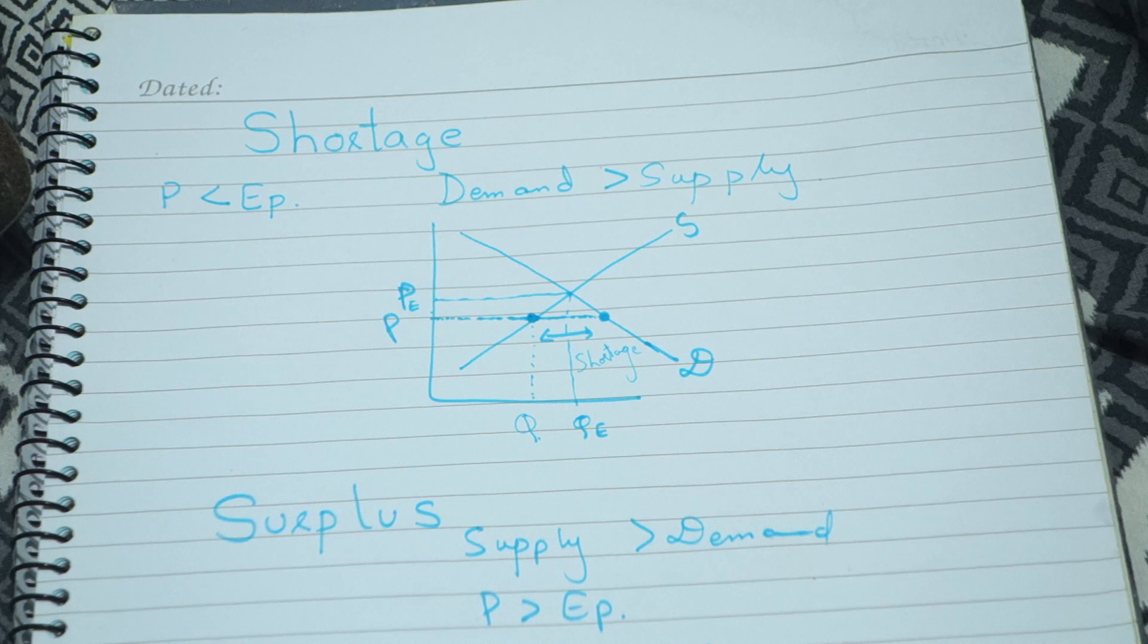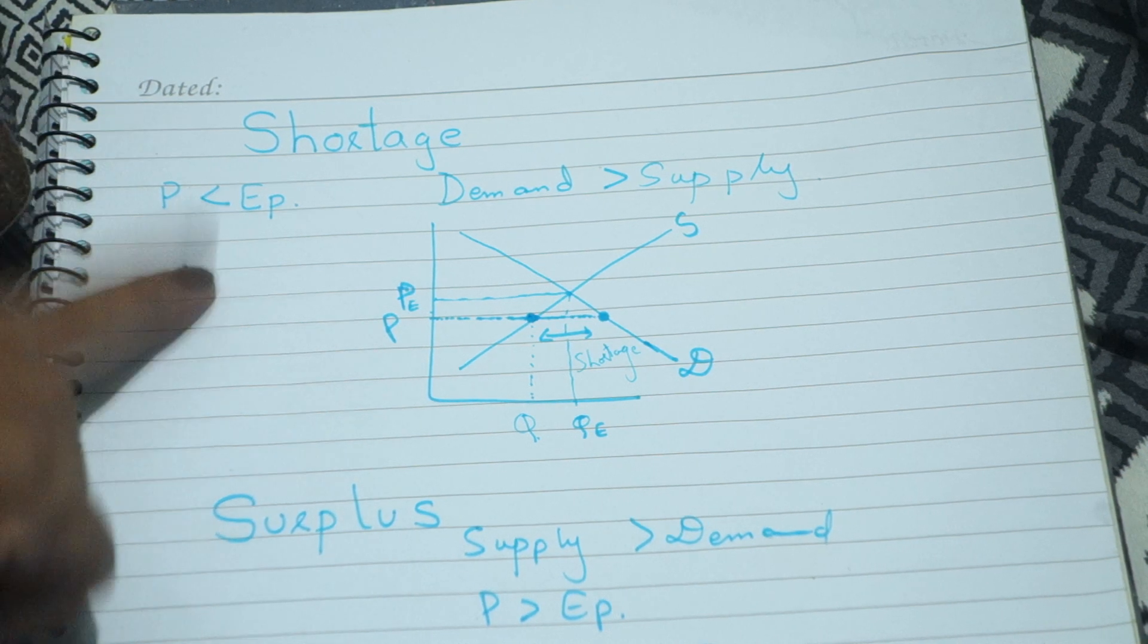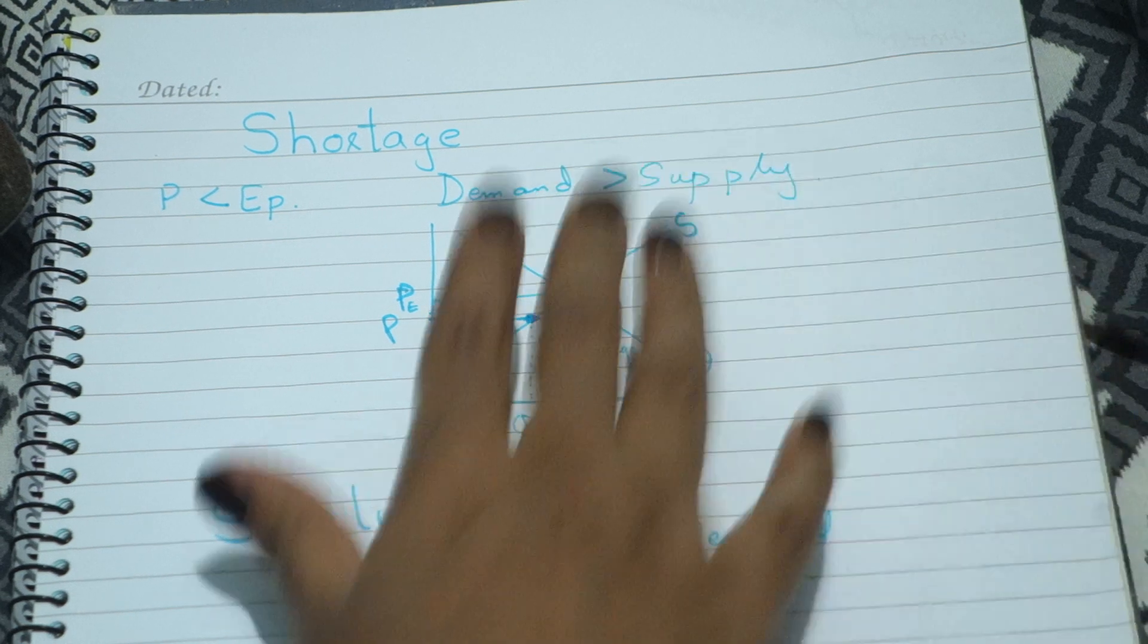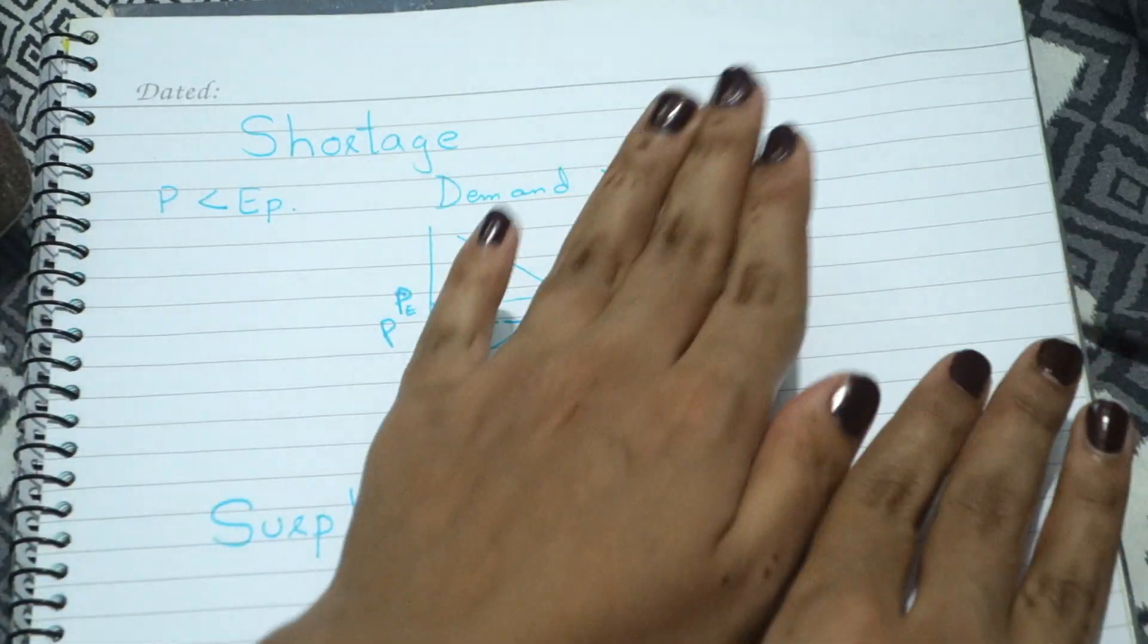Aaj hame economics ka topic padhne waale hain. Pehla hai humara shortage. Shortage kya hoti hai? Jab demand aapki zyada ho aur supply kam ho.